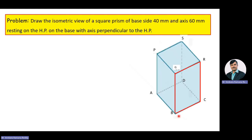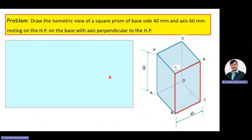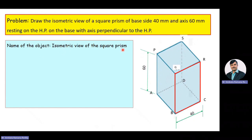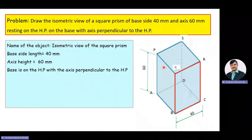The square prism has a base side length of 40 mm and an axis height of 60 mm. From the given problem, the name of the object to be drawn is isometric view of the square prism, base side length is 40 mm, and axis height is 60 mm. The square prism is resting on its base on HP and the axis is perpendicular to the HP.